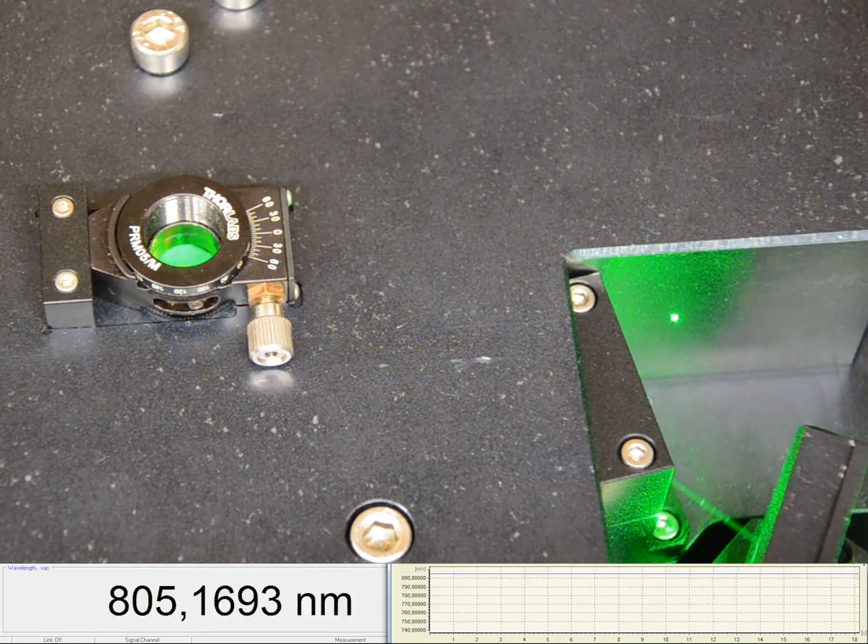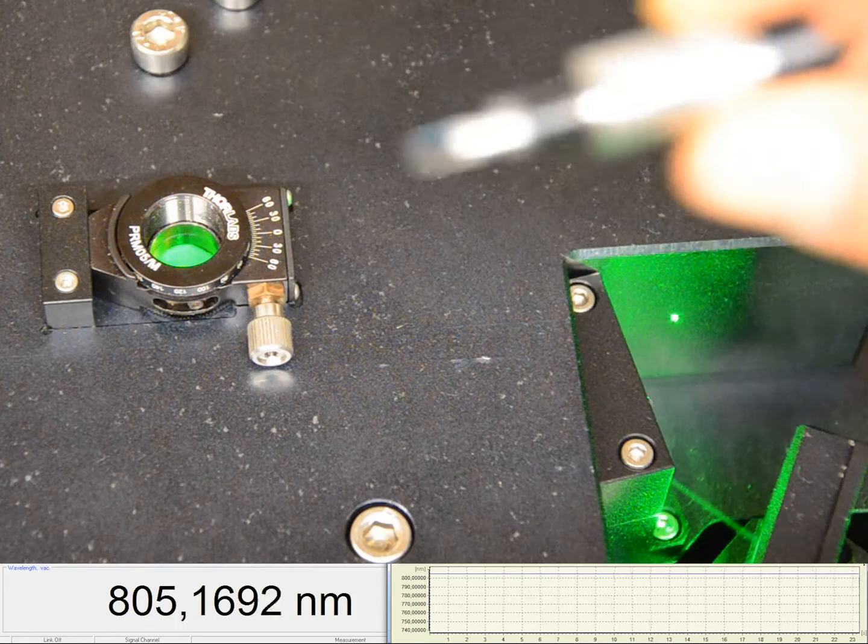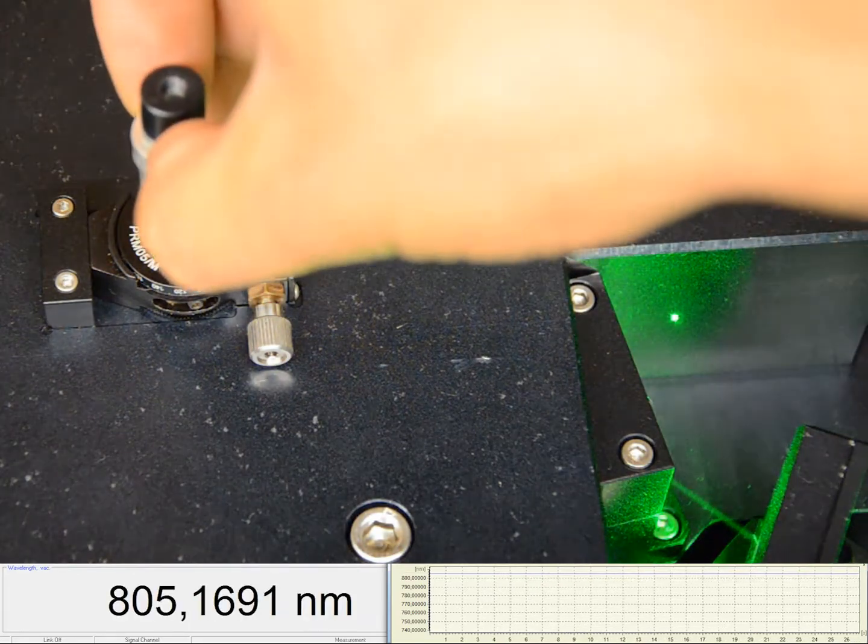To suppress unwanted modes in the spectrum and obtain a maximum at a particular position, it's simply a matter of inserting the corresponding slide.